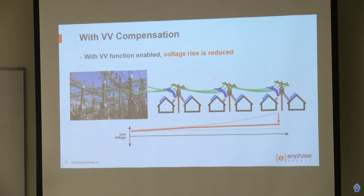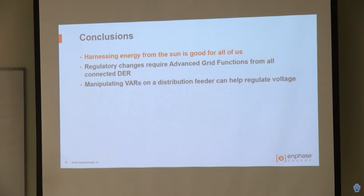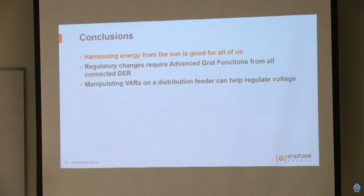So in conclusion: harnessing energy from the sun is good for all of us — I highly recommend going into the solar field. I've been in multiple electronic disciplines and this is the most rewarding. Regulatory changes — California Rule 21, Hawaii Rule 14H, IEEE 1547 — all require advanced grid functions for all connected DER. When we manipulate the VARs at the distributed energy resource where we're generating, we can affect the voltage on the distribution feeder.